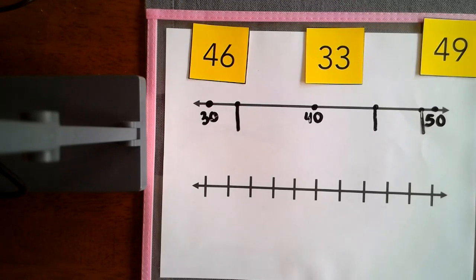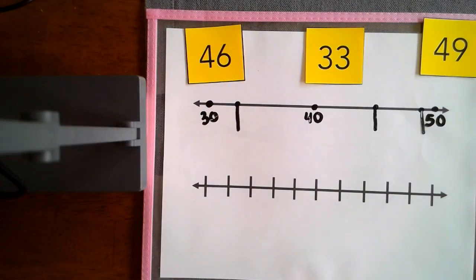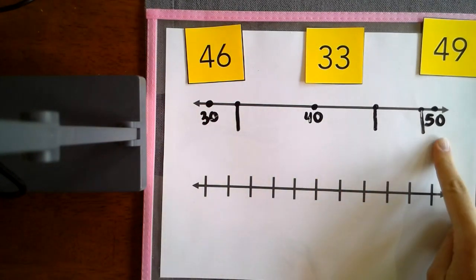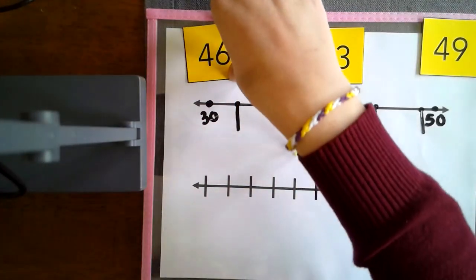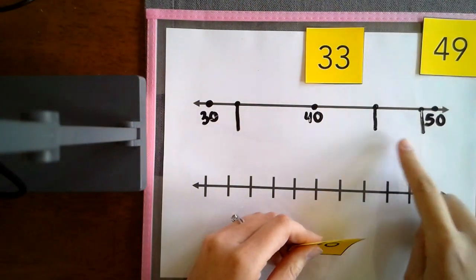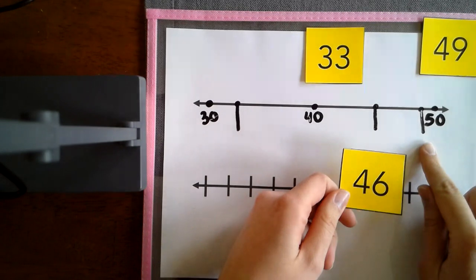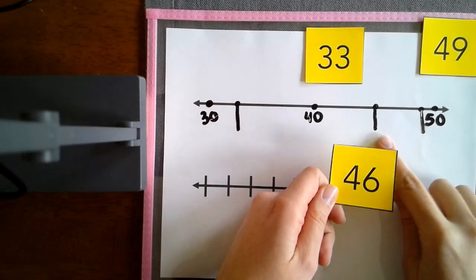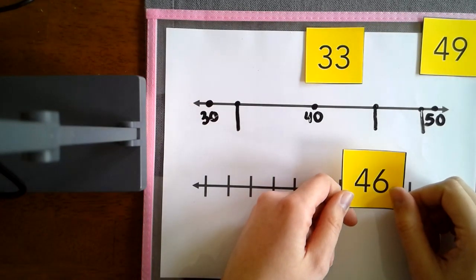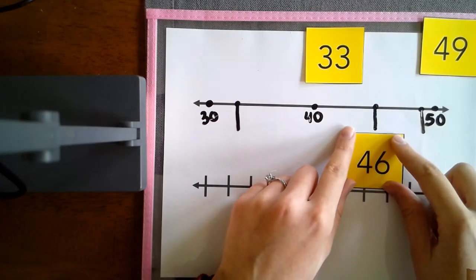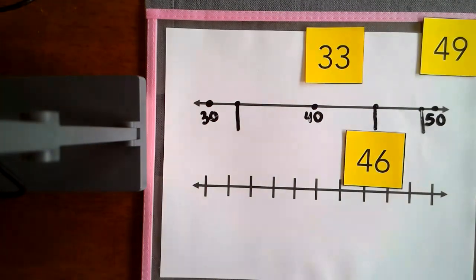Let's start with 46. Well, I know that 46 would be between 40 and 50, but I have two lines between those two. I have to think, is 46 really close to 50, or would it be more in the middle? Well, 46 is one more than 45, and 45 would be in the middle. So 46 would be closer to that middle line.